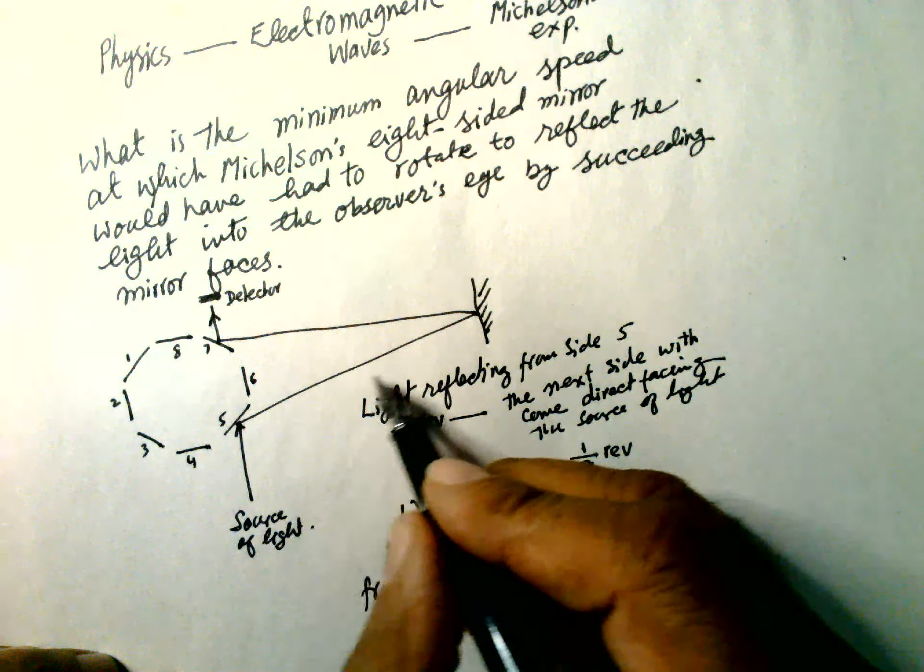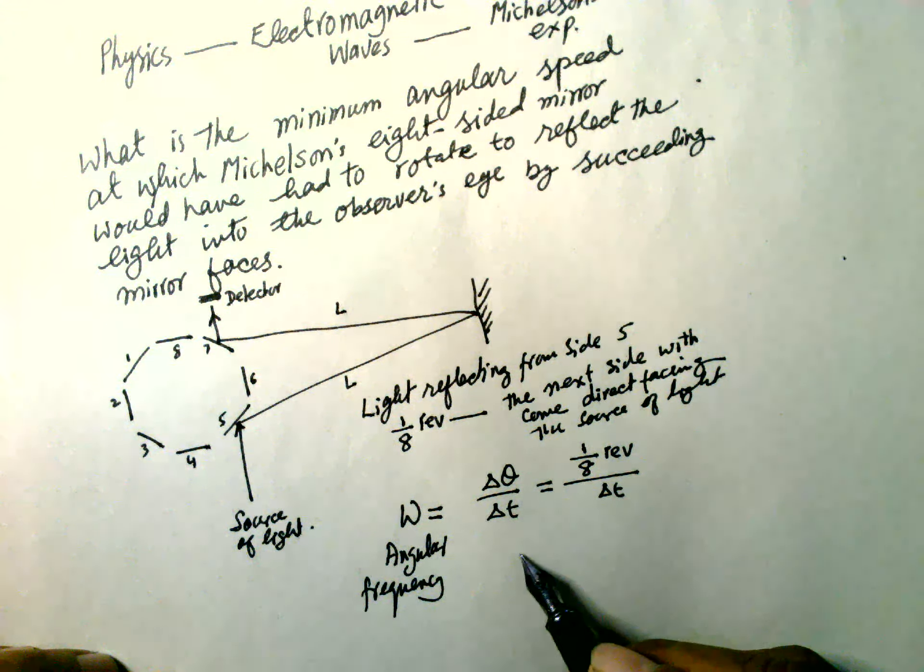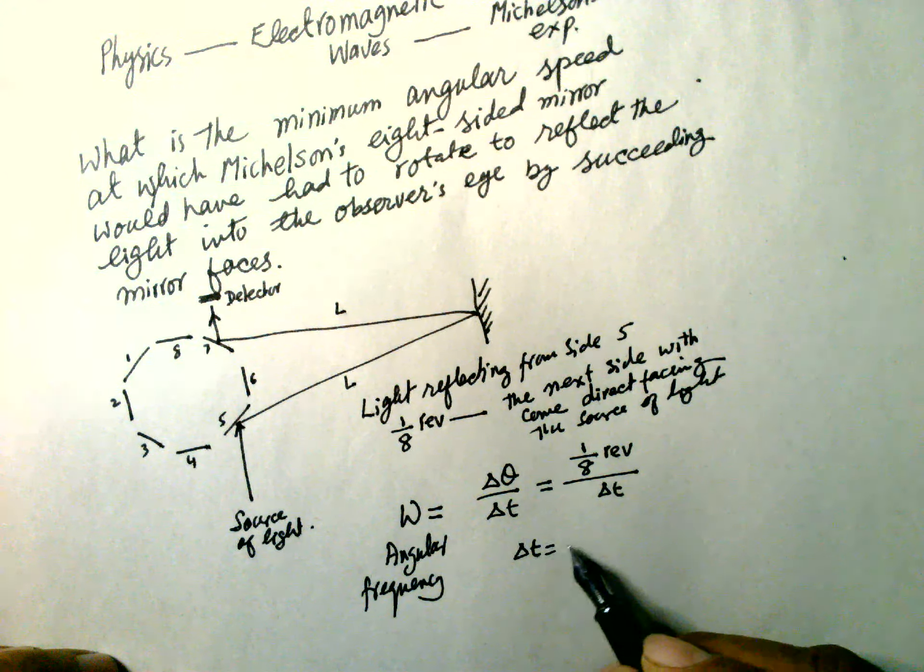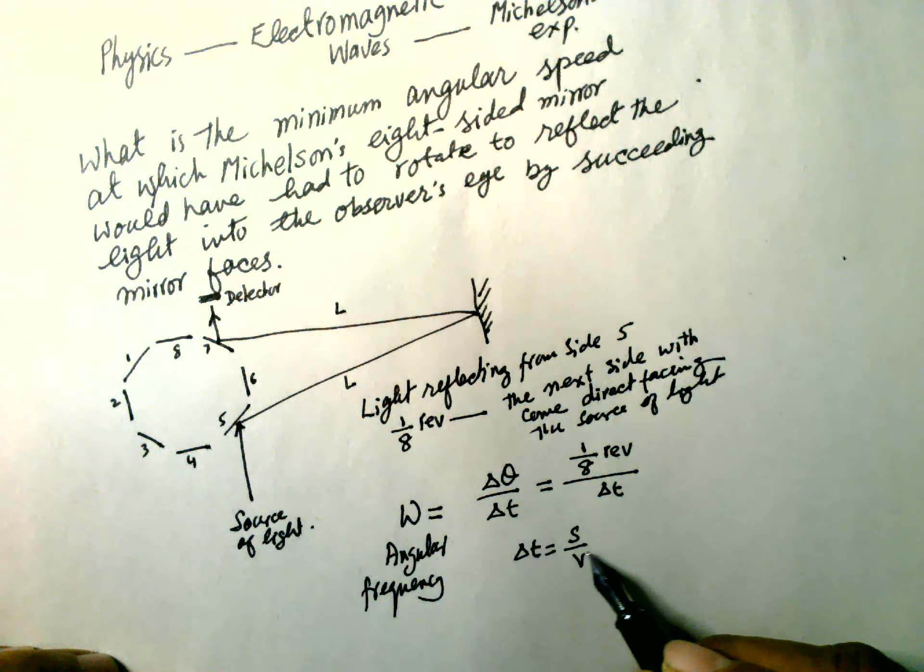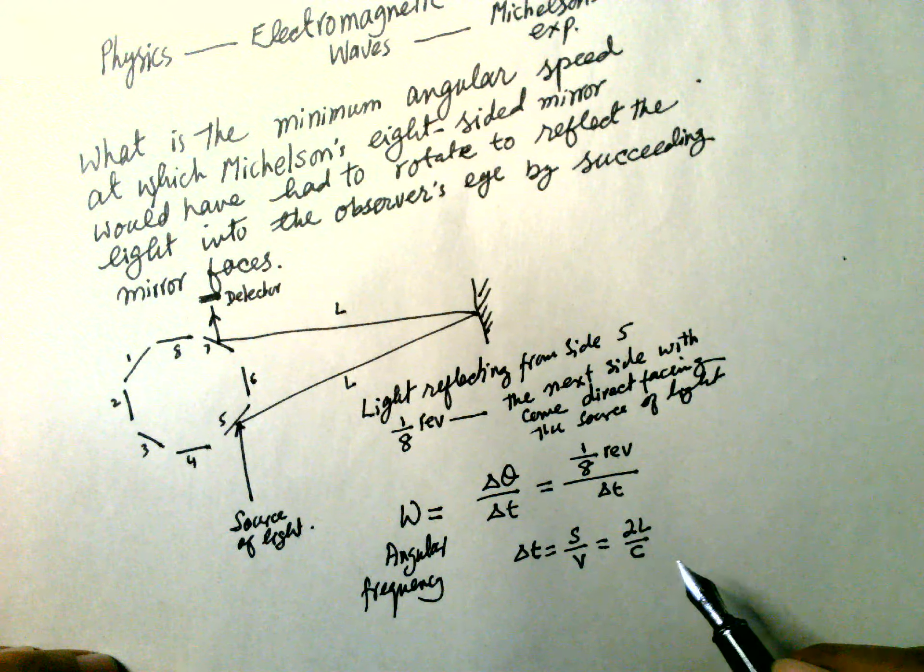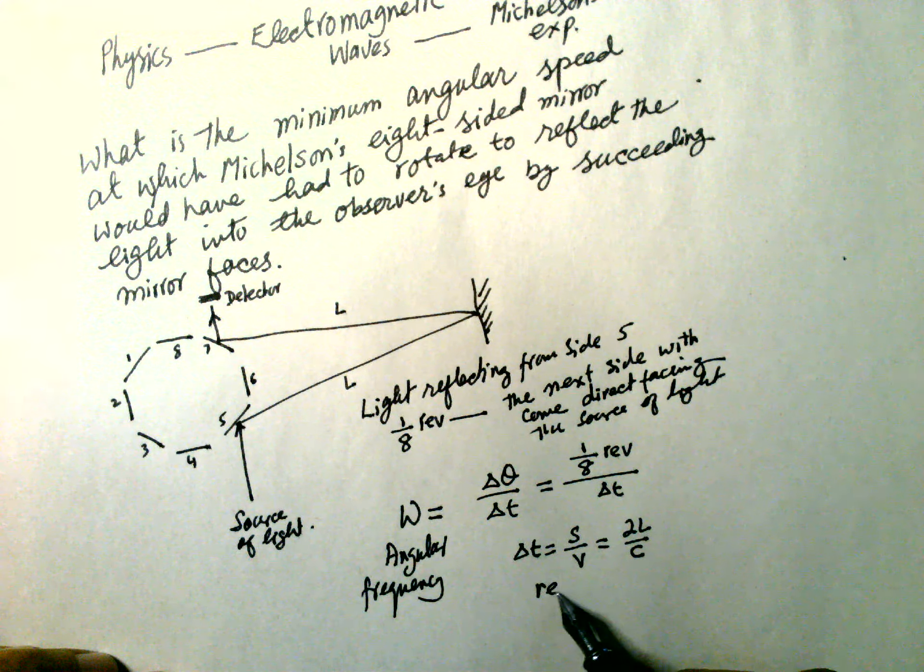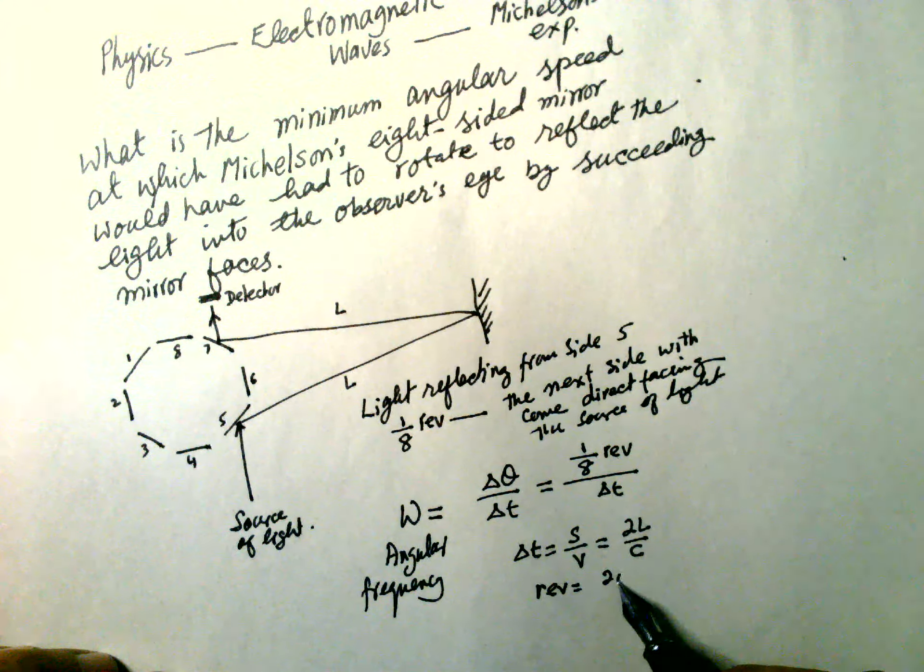And this distance is L, this is L, so 2L. Delta t is equal to s over v, s is equal to 2L over c. And one revolution is equal to 2π radian.